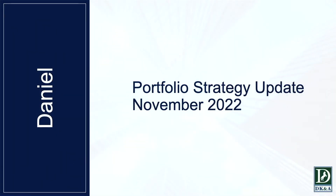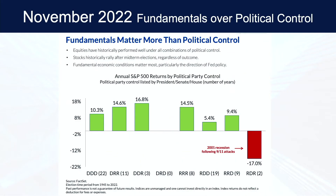Let's go ahead and move forward and talk about the portfolio strategy update — what have we done so far and what will we be doing. When you're looking at this chart, fundamentals matter more than political control. On the left-hand side you've got rates of return, and on the lower axis you have letters and numbers representing the political parties in control — the presidency, the Senate, and the House. That correlates with how the returns were in the market during the times those parties were in power, and that's where you look at the green bar.